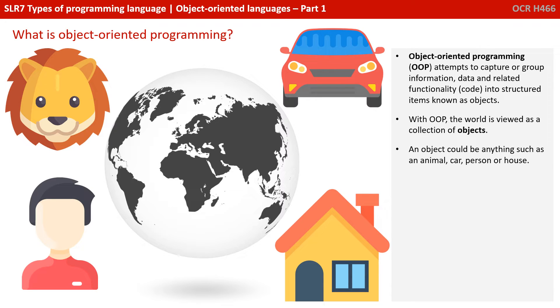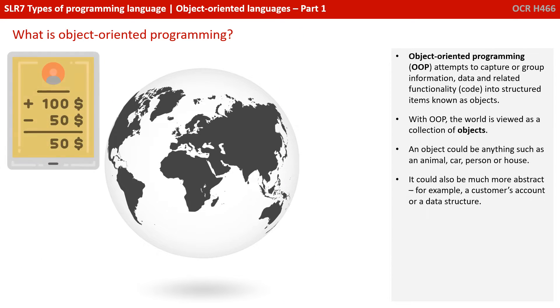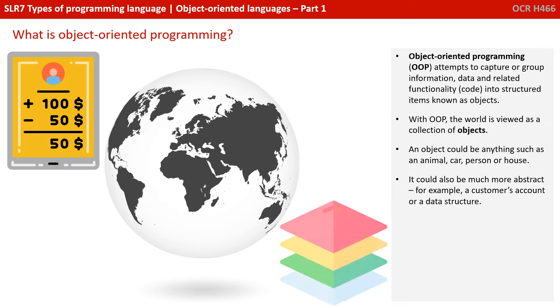Now, an object could be anything, such as an animal, a car, a person or a house. Or it could be something much more abstract, for example, a customer's account or a data structure such as a stack or a queue.